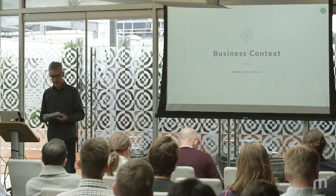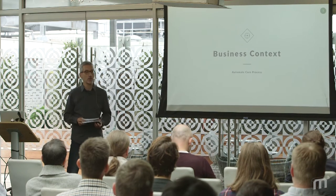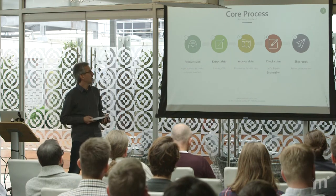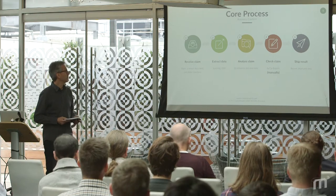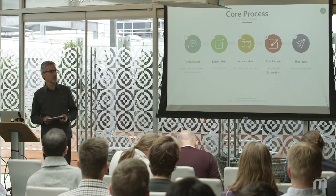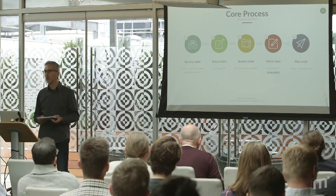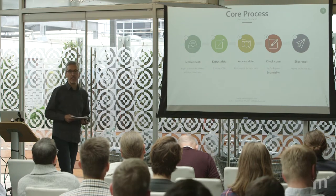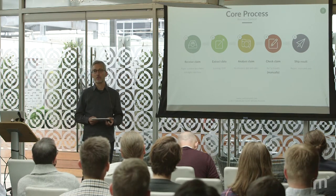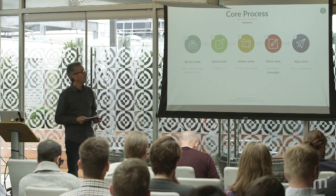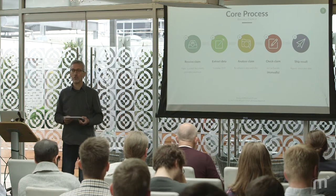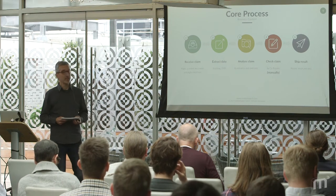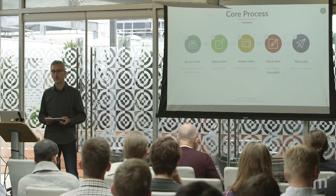Let's have a look at Control Expert's core process to understand where machine learning has been applied. The core process of claim handling is visualized here. In step one, we receive claims in different formats — paper, scanned documents, or already digital. In step two, we extract the data and bring it to a standard format. Step three already analyzes the claim automatically, checks against reference data, and applies some rules. In step four, 250 car experts check the claim manually from a technical perspective. At the end, we create a report and ship it back to our customers.